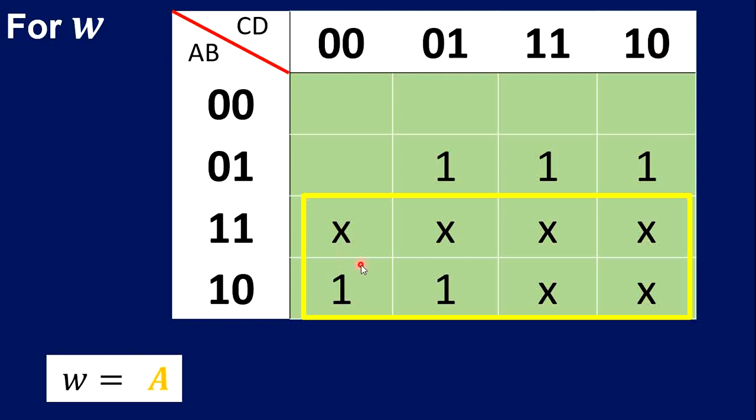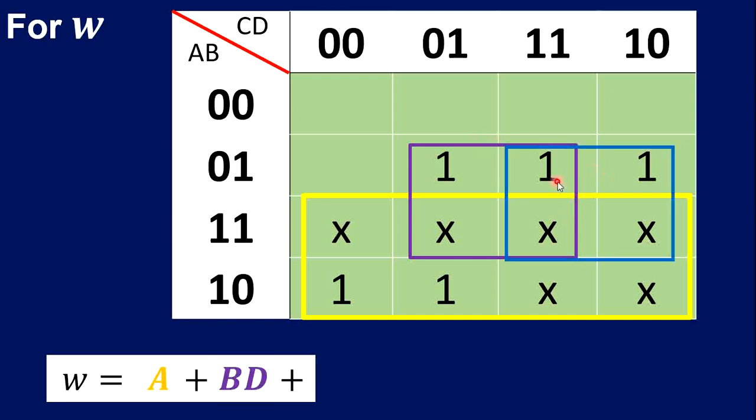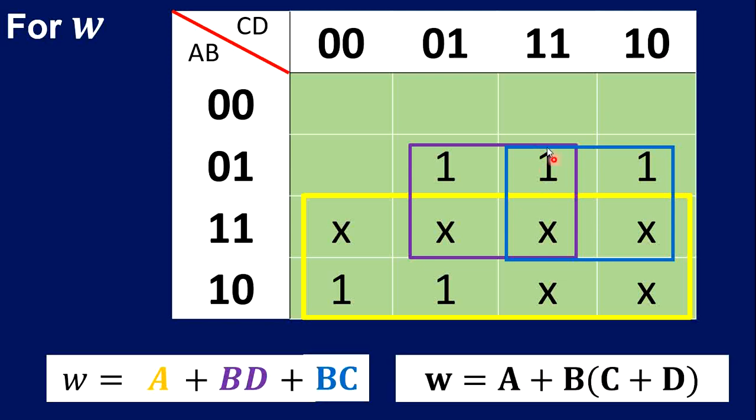There's still a remaining one to group. Let's group it into violet. A is not possible. B has the same one, so we'll take B. Looking at C, not possible—they're different. D is the same, so the value for group violet is BD. The blue group: A has different values. B has the same value, so B. C is yes. D is no. So this blue group is BC. Simplified to minimize gates: W equals A plus BD plus BC. We can factor out B from these two minterms, so W equals A plus B(C plus D).